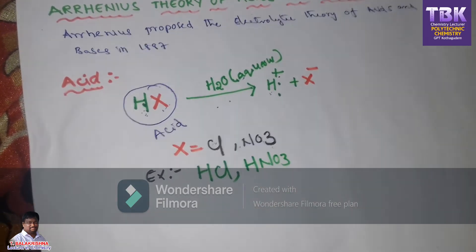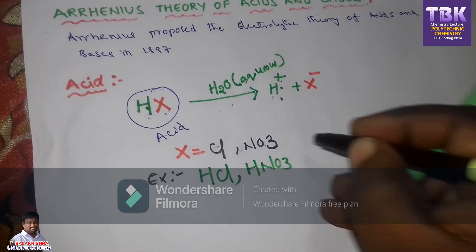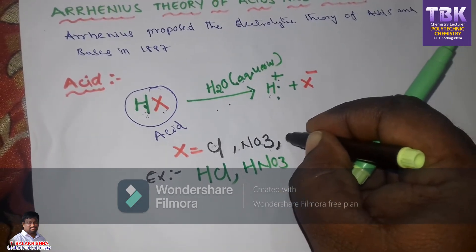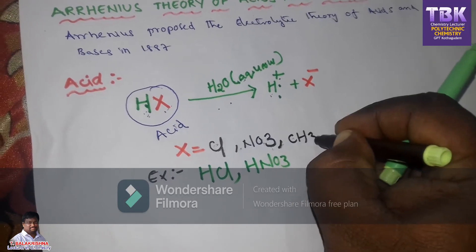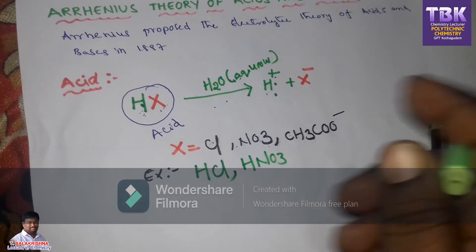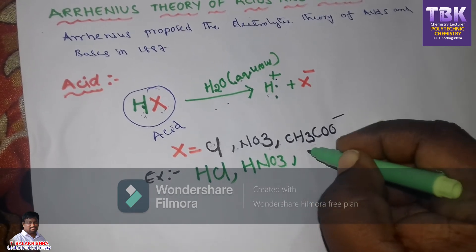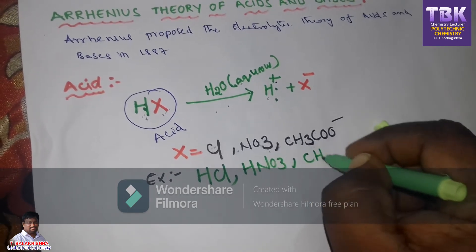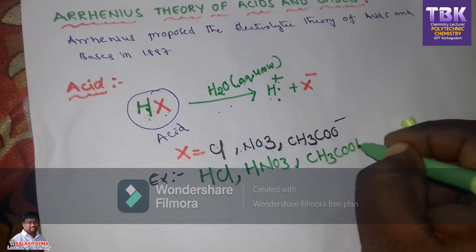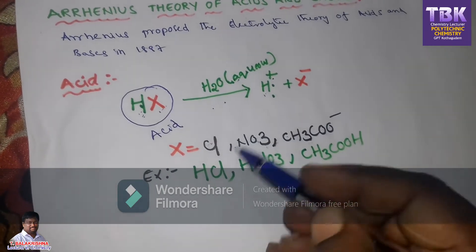If you take X equal to NO3, the molecule is HNO3, nitric acid. If you take X equal to CH3COO minus, that molecule is CH3COOH, acetic acid. These are all examples of acids.